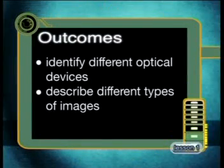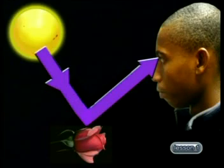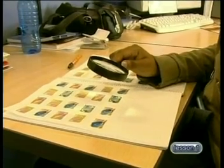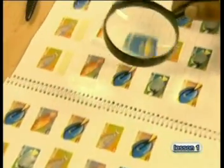By the end of this lesson, you should be able to identify different optical devices and describe different types of images. You should remember that we see objects because light reflects off them into your eyes. The lenses in your eyes use this reflected light to form an image of the object on your retinas. Your brain then interprets this image. But we don't only see objects by looking straight at them with our naked eye — sometimes, when we need to form a specific type of image, we make use of an optical device.